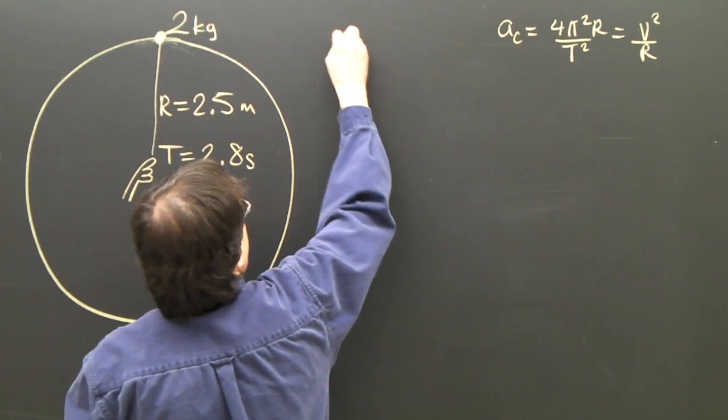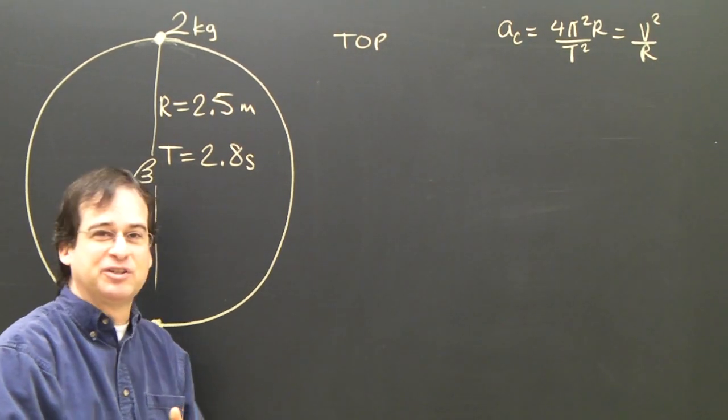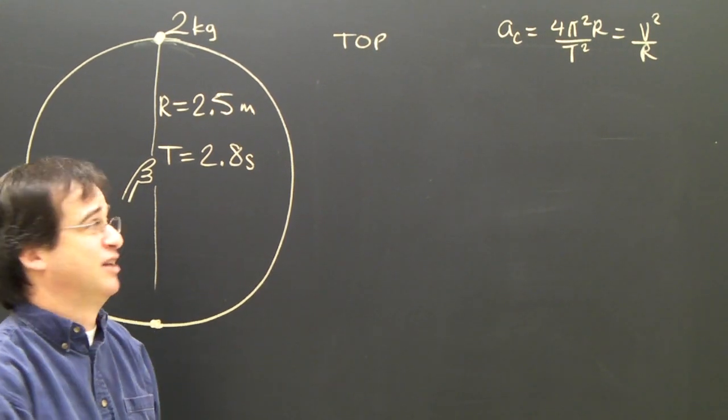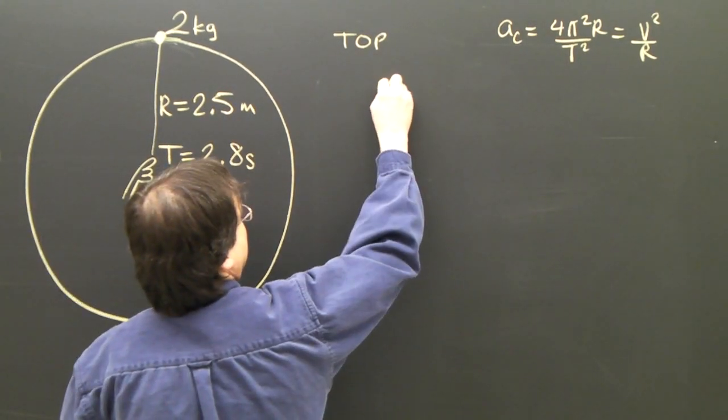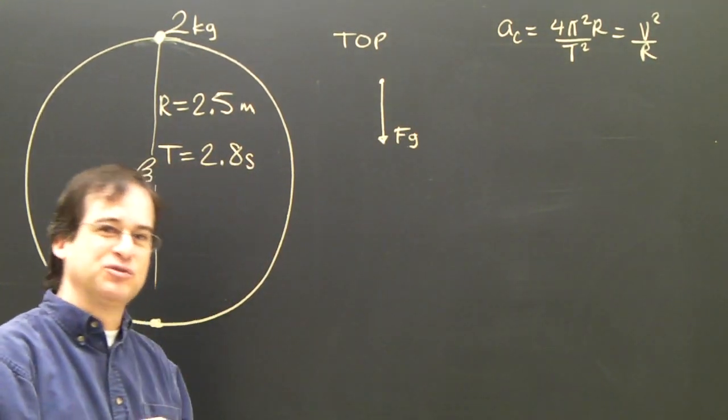Well, let's look at the top first. We're going to do what we always do, draw a free body diagram, label the direction of acceleration as positive, solve f net equals ma, and we should be able to find out the tension. So at the top, is there gravity? Yes, there's gravity. Is it sitting on a surface? No, there's no fn.